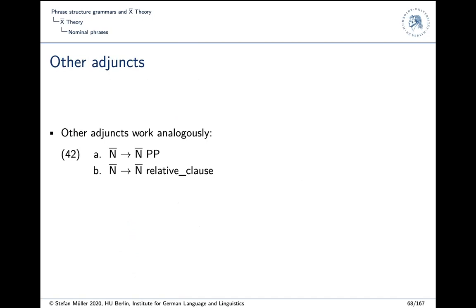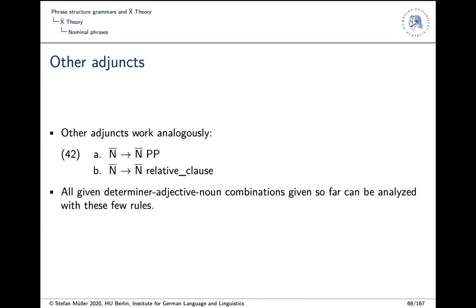We also have adjectives in our rules, but we can have other adjuncts as well. In example 42, we have a PP adjunct or a relative clause adjunct — both can attach to N-bar and yield N-bar again. Therefore we can have as many as we want. With just five rules we can derive all the NPs discussed initially and many more. We don't have to individually write down every combination; it all follows from the general rules.